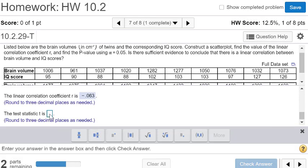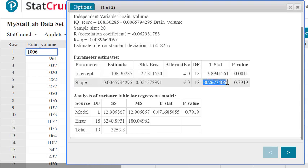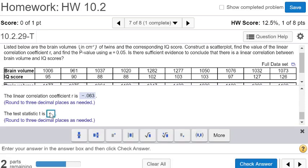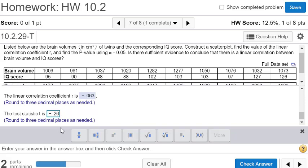Then they want us to find our test statistic. The test statistic falls under the slope. The test statistic for the slope is the same as the test statistic for the correlation coefficient we're looking for. That'll be negative 0.268.